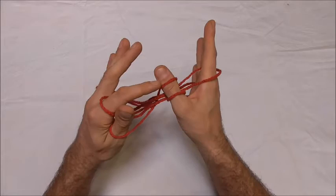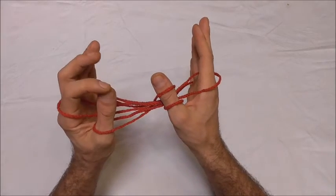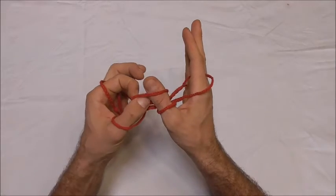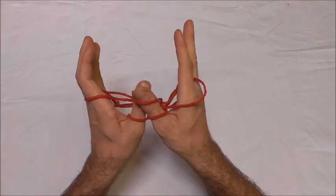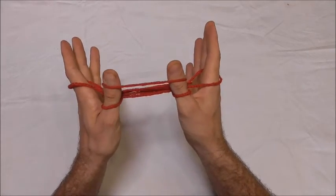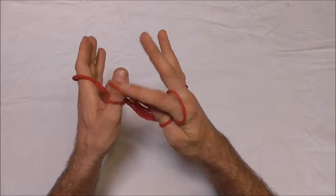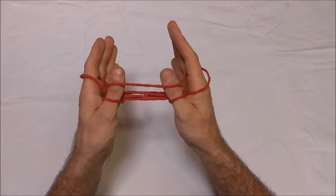And now I want to get this loop onto this thumb as well so I'm just going to pick it up, push my thumb in there so that loop is now on both thumbs and then I just want to get these bottom loops off my thumb.